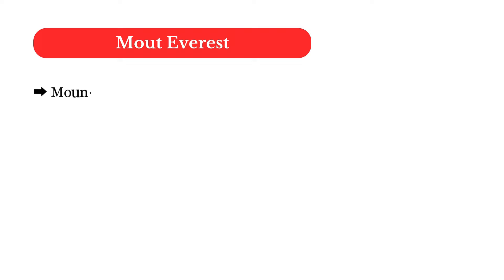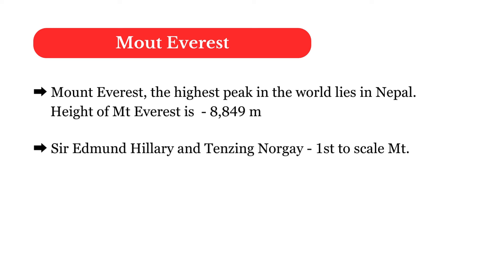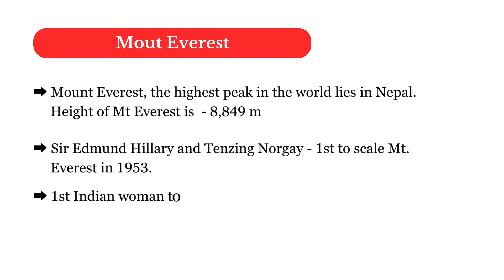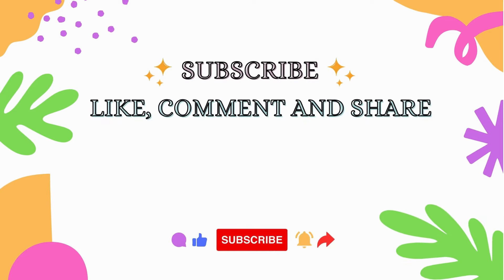Important points about Mount Everest: it is the highest peak in the world, located in Nepal, with a height of 8849 meters. Sir Edmund Hillary and Tenzing Norgay were the first persons to scale Mount Everest in 1953 — very important. The first Indian woman to scale Mount Everest was Bachendri Pal in 1984. That concludes the Great Himalayan Range; in the next video we will learn about the Great Peninsular Plateau.